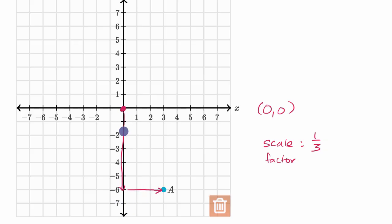So one-third of that would be two down and one to the right. Two is one-third of six and one is one-third of three. So you will end up right over here.